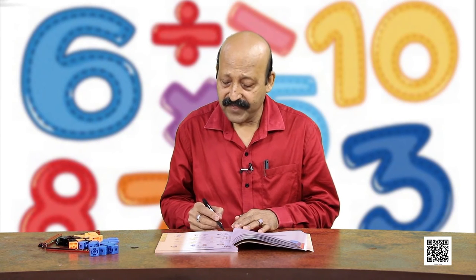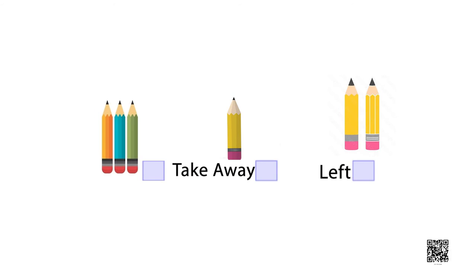There are 3 pencils with a boy — 1, 2, 3. He has given 1 pencil to a girl. So 1 has been taken away. How many are left? Count: 1 and 2 — only 2 are left. This boy is showing 3 fingers, then gives 1, and shows 2 fingers remaining. So it is 2.